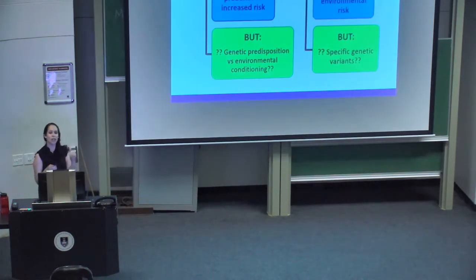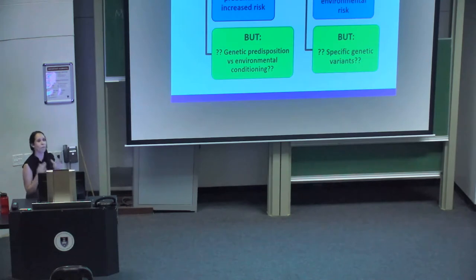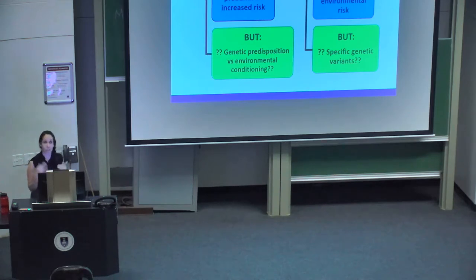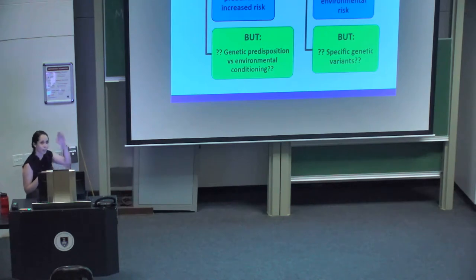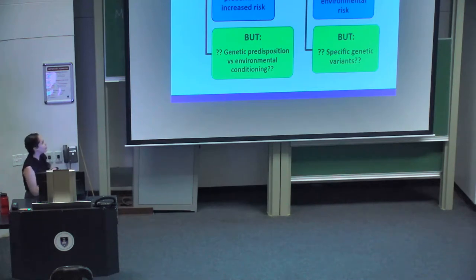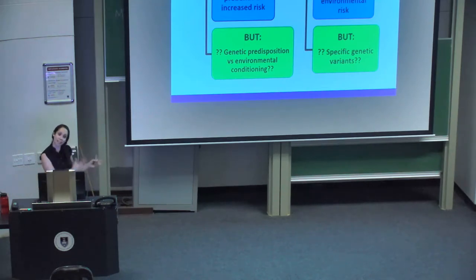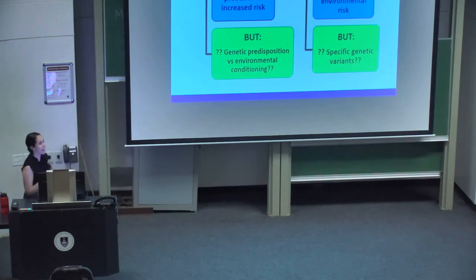Family studies formed the benchmark of early heritability research. Researchers tracked generations of a particular family and looked at the prevalence of a disorder manifesting. Family studies were great for identifying relatives at increased risk of developing a disorder, but their main disadvantage was that they were unable to tease apart whether increased risk was due to genetic or environmental factors.